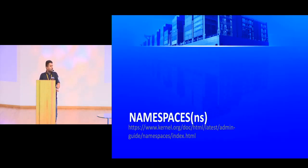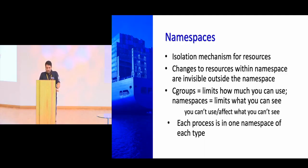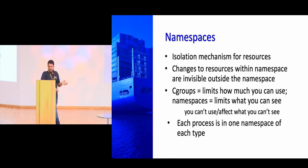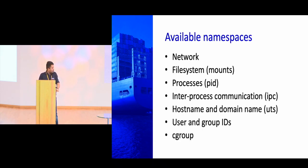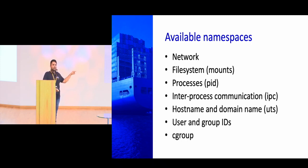The key difference: cgroups limit how much resource a process can use, while namespaces limit what resources a process can see. Just like cgroups, namespaces also have subsystems. The available namespaces are: network, file system, process ID, and inter-process communication. For example, the network namespace: when we start a container it gives the container a connection to your eth0 or bridge. The network namespace is the one that helps connect or wire that container to the actual network.